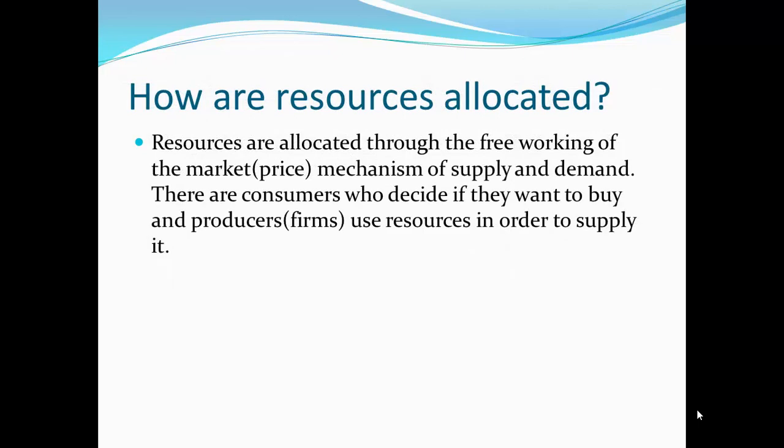So how are these resources allocated? Resources are allocated through the free workings of the market, the price mechanism of supply and demand. We will get back to this later when I cover supply and demand in later lessons. There are consumers who decide if they want to buy, and producers who supply these resources. The government also gets involved because it sometimes owns some of the resources — like in the UK, which is a welfare state, where the government owns some of the money and resources to provide for people who need it.